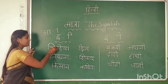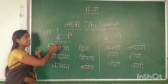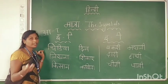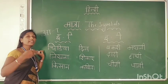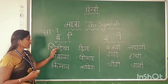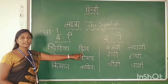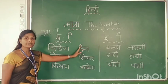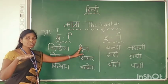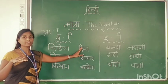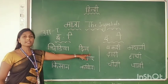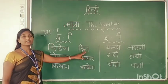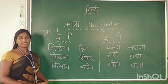If the symbol is placed before the Vyanjan letter from the front side, it gives the short E sound. If used after the Vyanjan letter, the sound becomes long. For example: Ki, Ri — like this. One more example: the letter Da — I join the symbol before Da, giving the short sound Di. Da plus short E = Di. Di + Na = Din. Din ka matlab kya hai? Day.